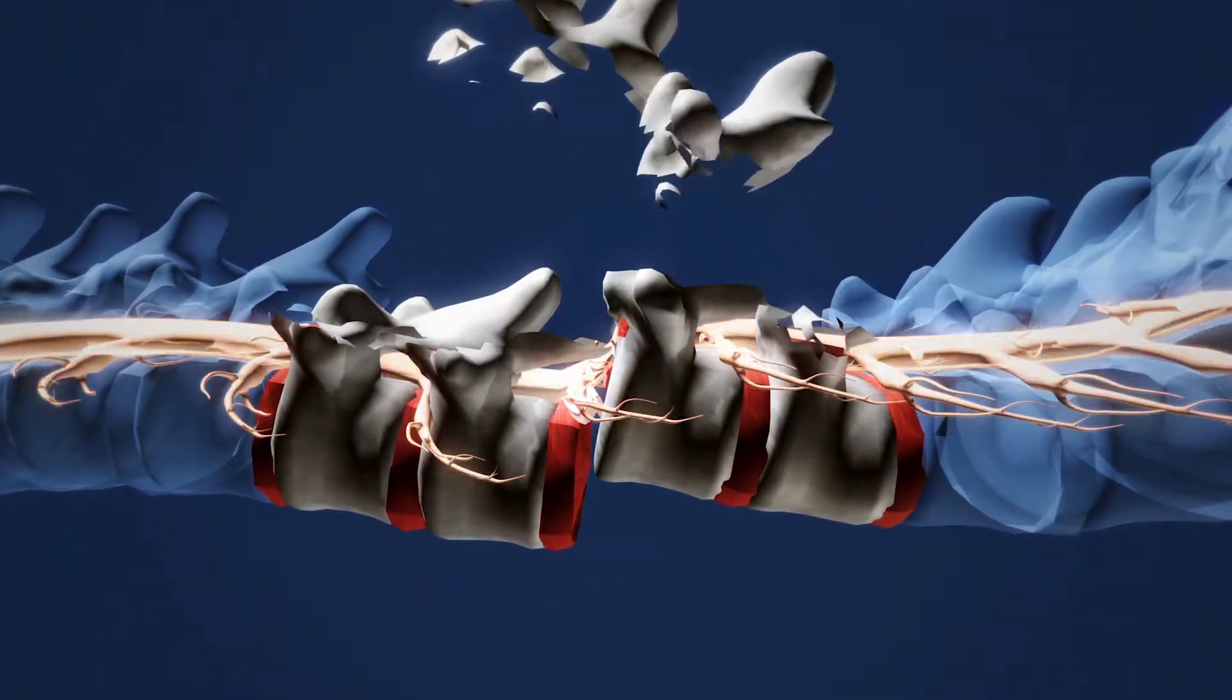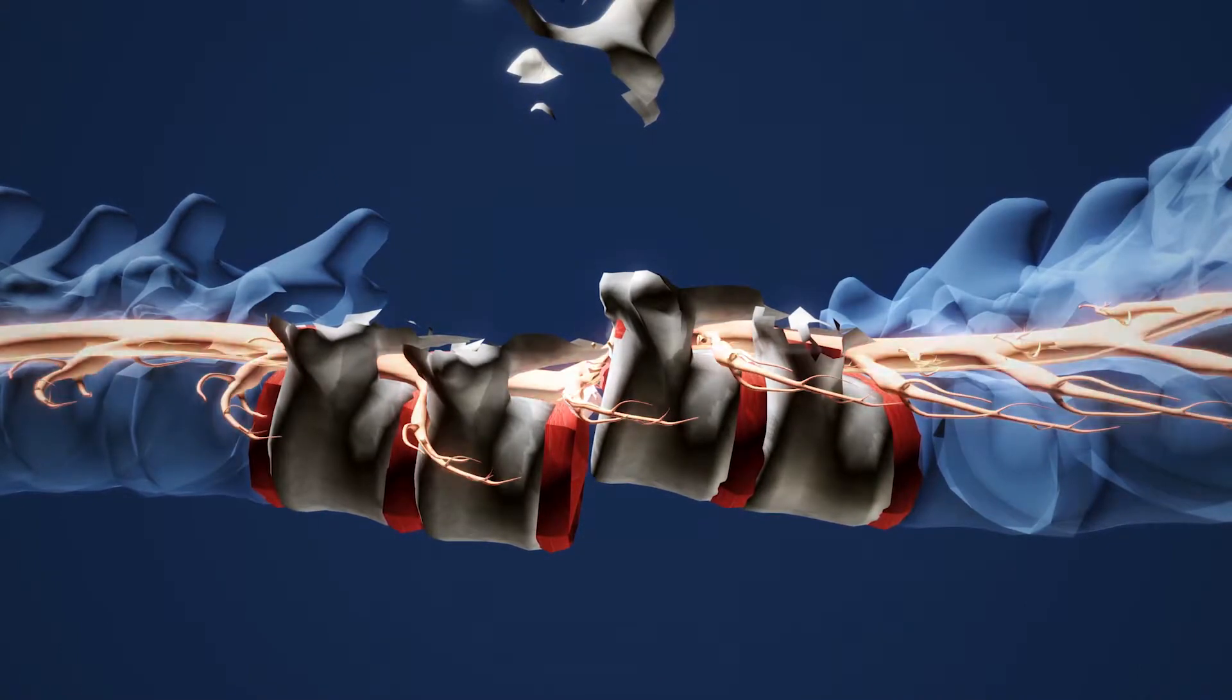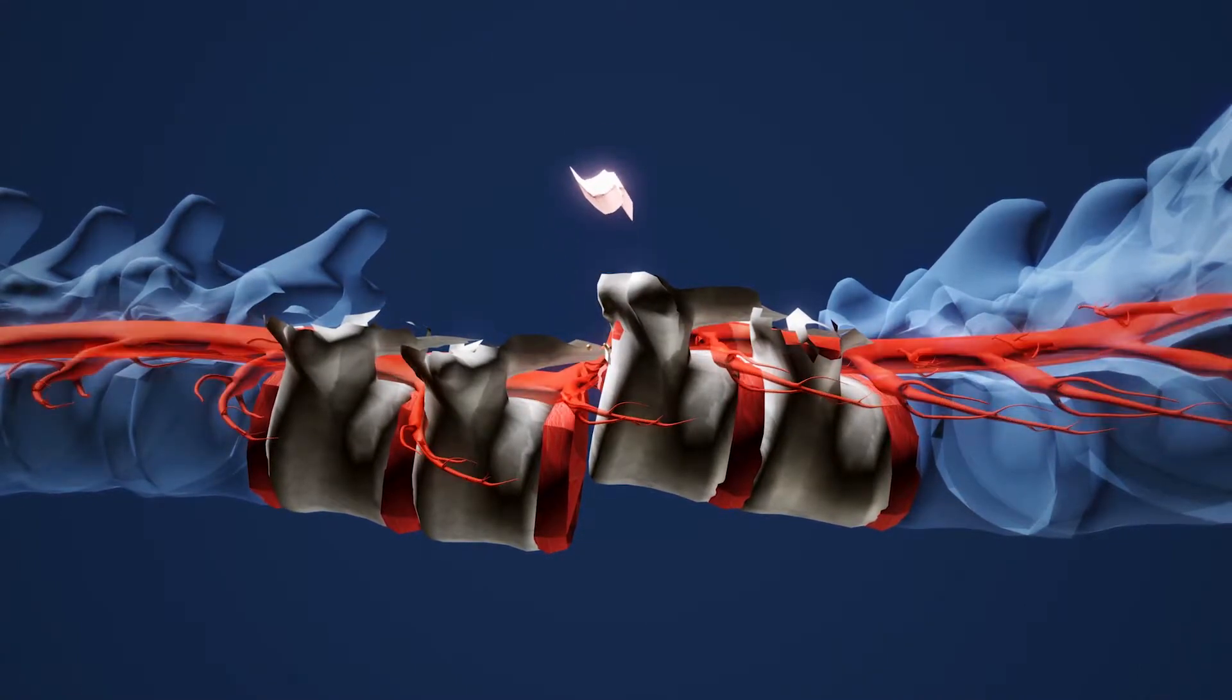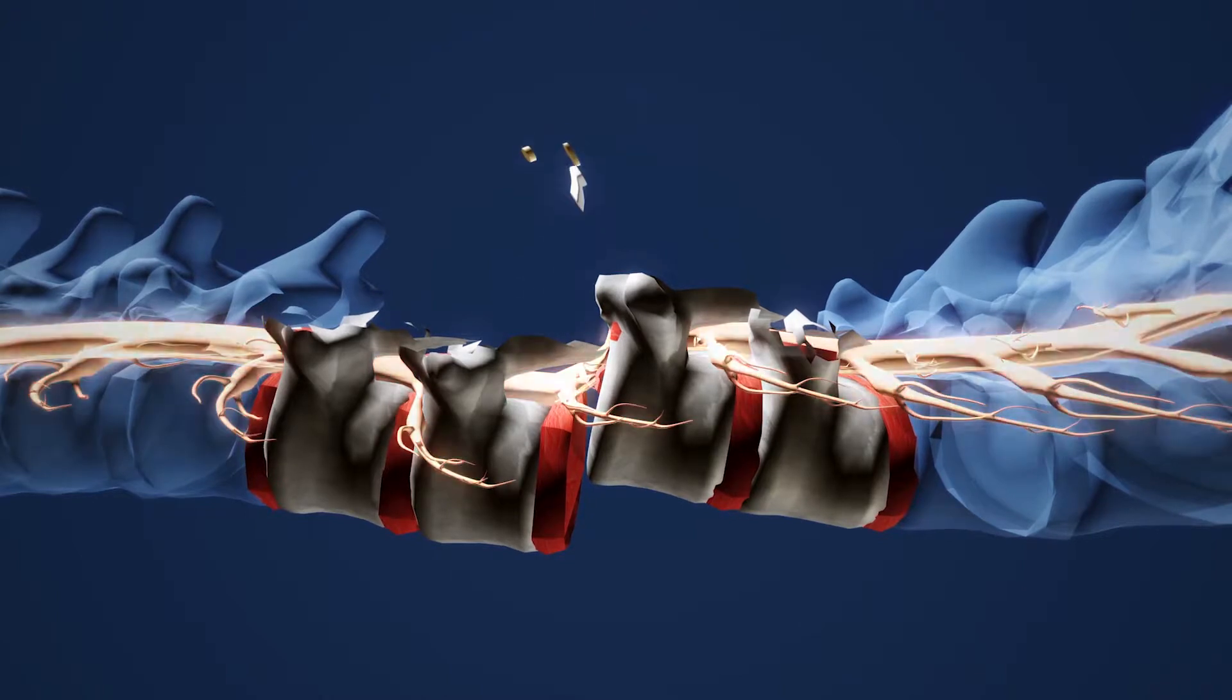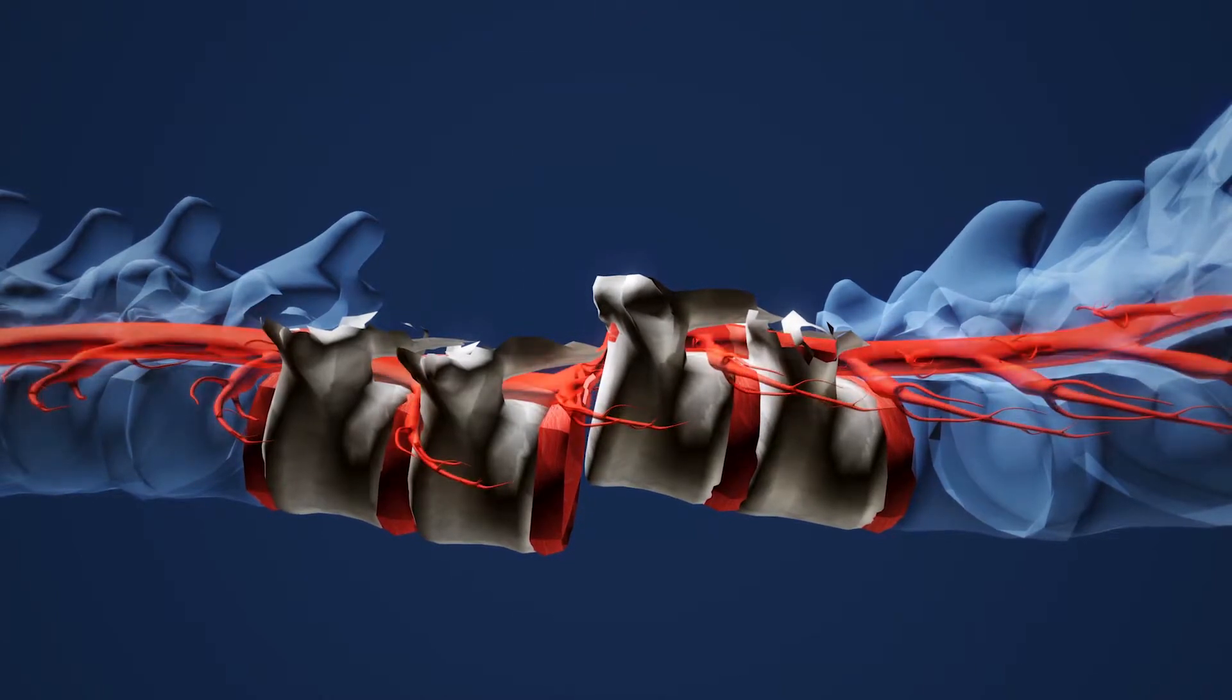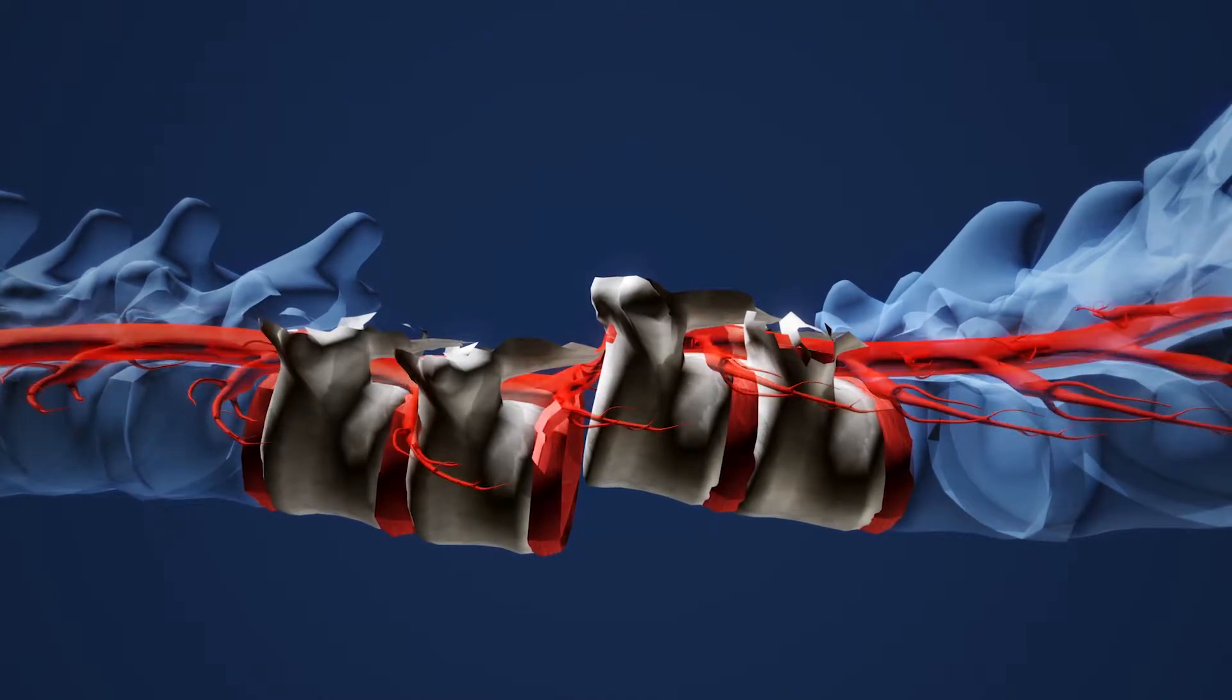So to treat this, we remove all of this bone, the lamina from the back. This allows us to then get into the front of the spinal canal and bring bone, disc, ligament and pull it out of the spinal cord itself.